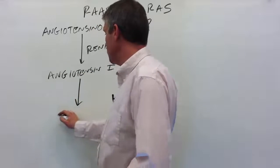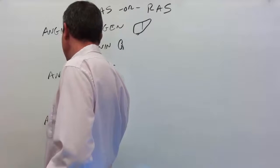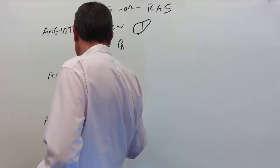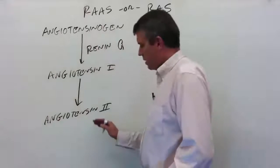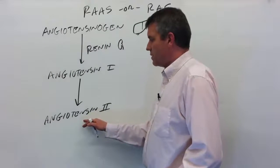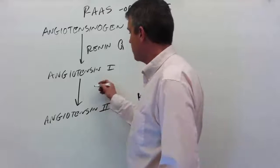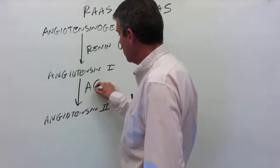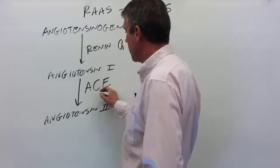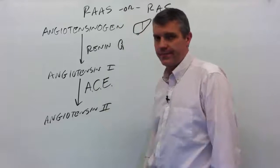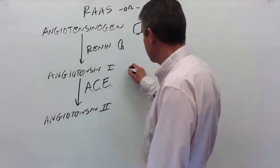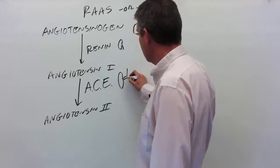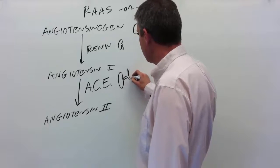Next, angiotensin I is converted into angiotensin II by another enzyme. This enzyme is found up in the lungs, and it's called angiotensin converting enzyme or ACE.